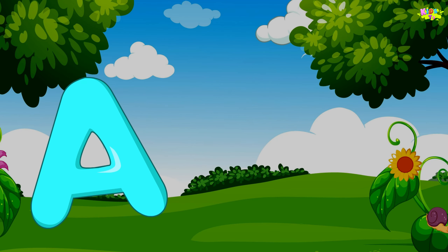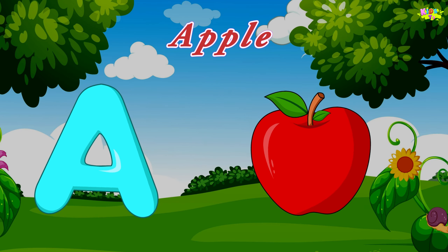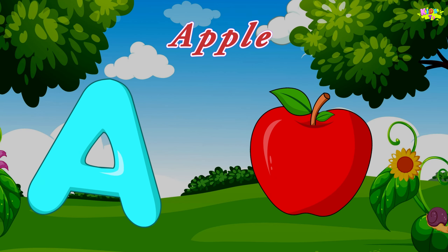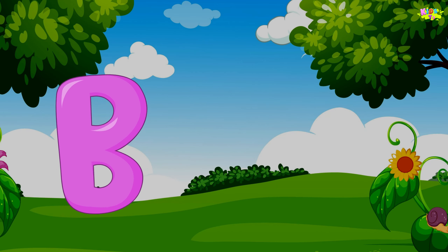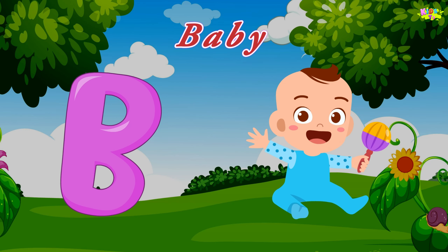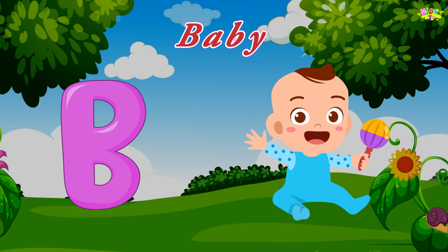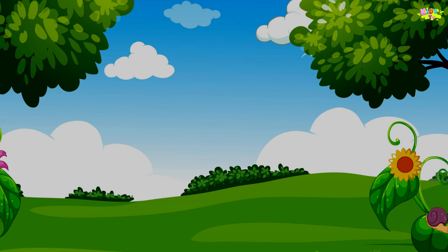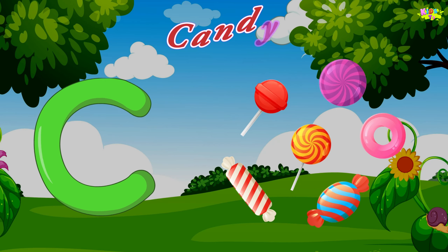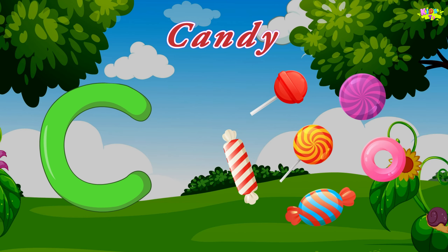A is for apple. A, A, apple. A, A, apple. A, apple. B is for baby. F, F, baby. F, F, baby. B, baby. C is for candy. K, K, candy. K, K, candy.